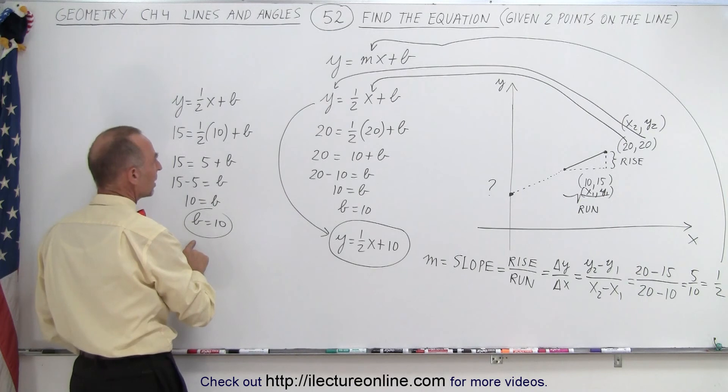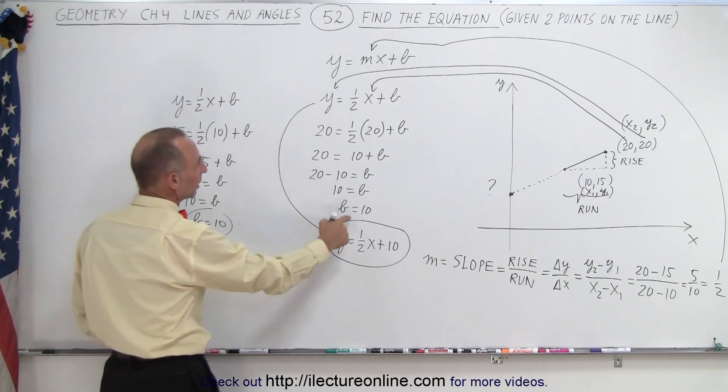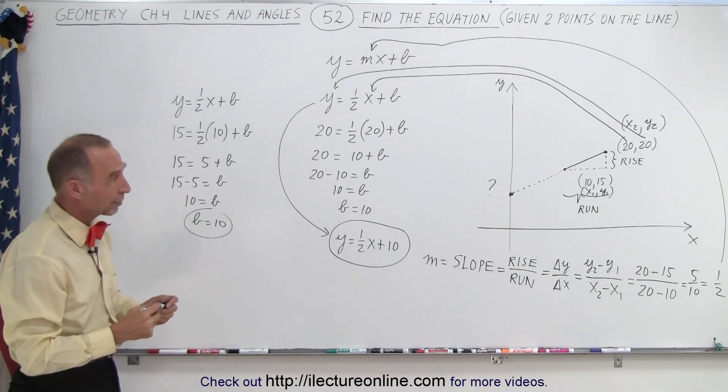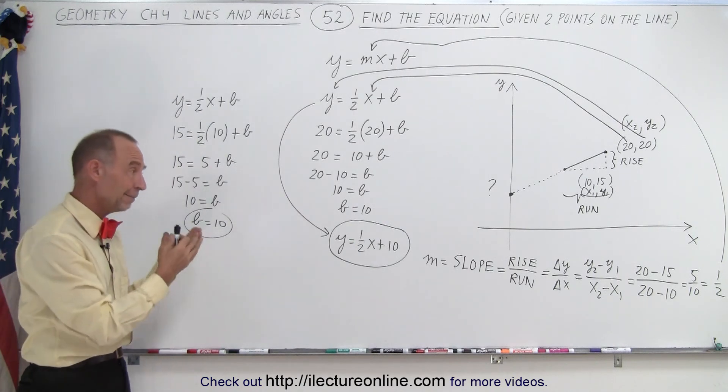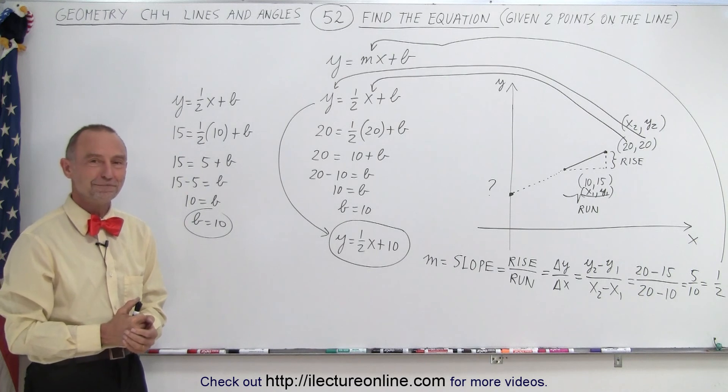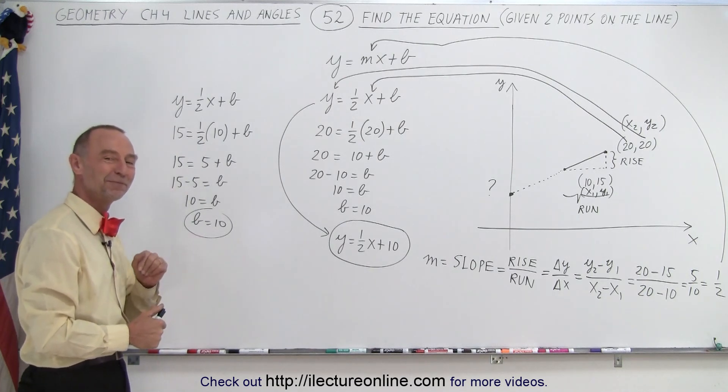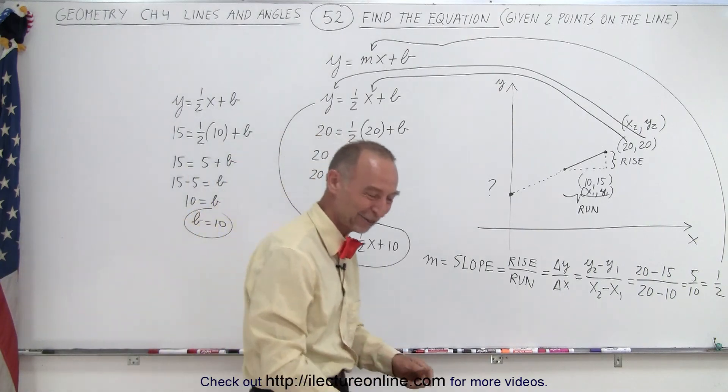We get the same value for b. And then, again, you plug it in and you get the same equation. So again, it didn't matter which point on the line you picked to find your y-intercept. And that is how it's done. See, I did it both ways. You were going to ask for it. I knew you were going to ask for it.